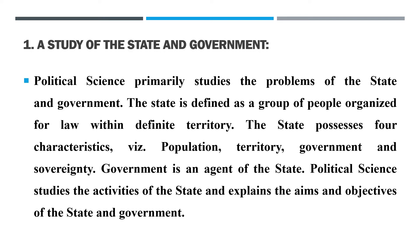Absence of any one of these elements means no state can prevail. The fourth element is sovereignty. Sovereignty has two types: internal sovereignty and external sovereignty.